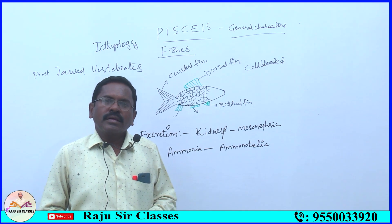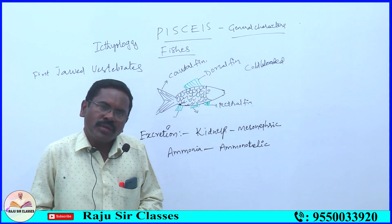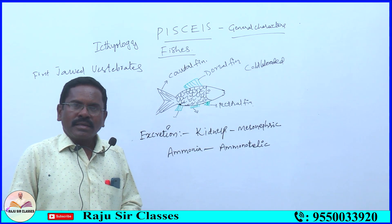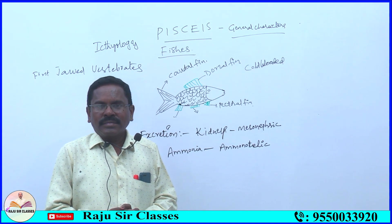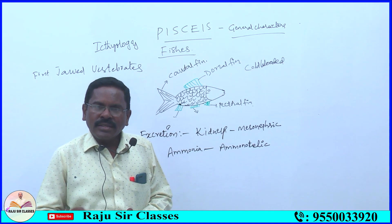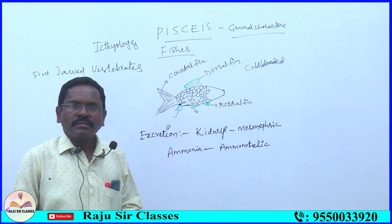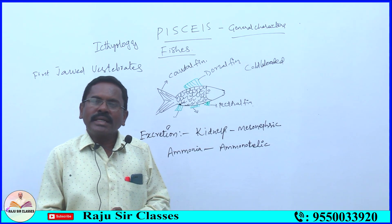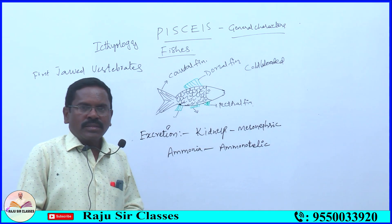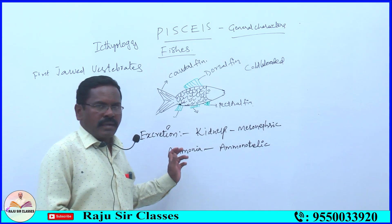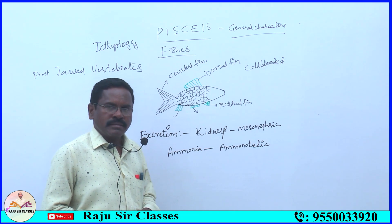In the case of fishes, cartilaginous fishes are ureotelic — they release urea. So the majority of fishes are ammonotelic, while cartilaginous fishes are ureotelic.